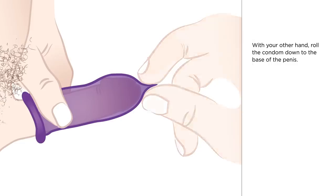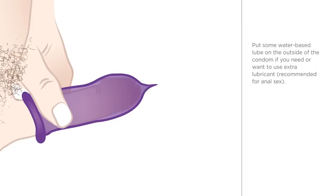Put some water-based lube on the outside of the condom if you need or want to use extra lubricant. Recommended for anal sex.